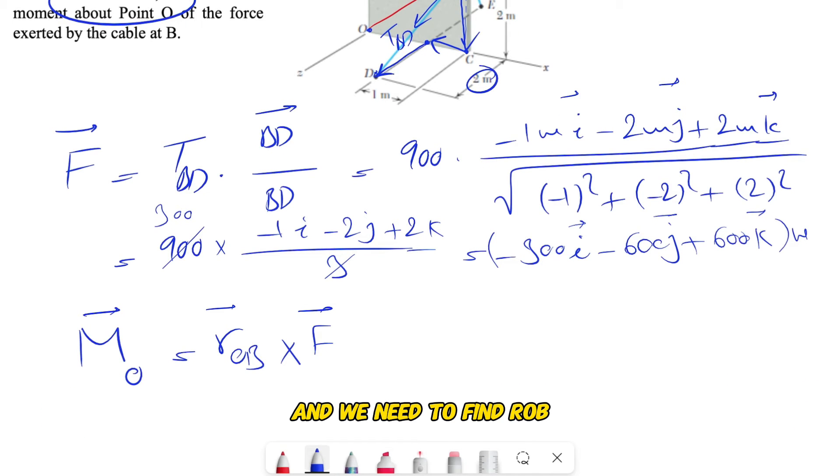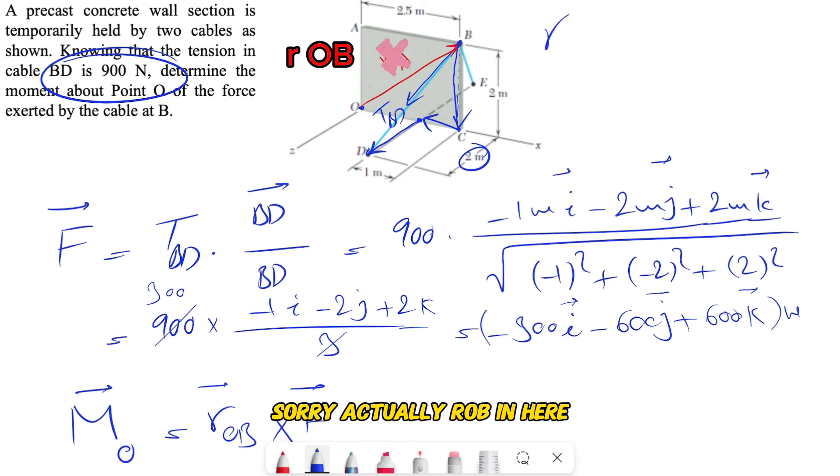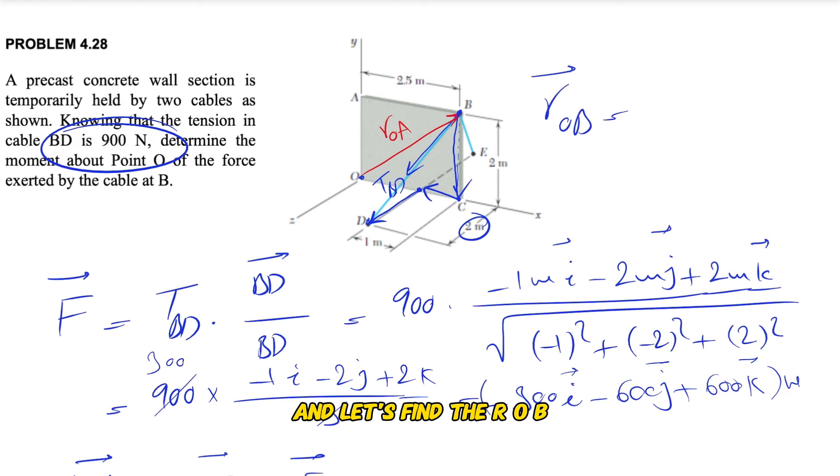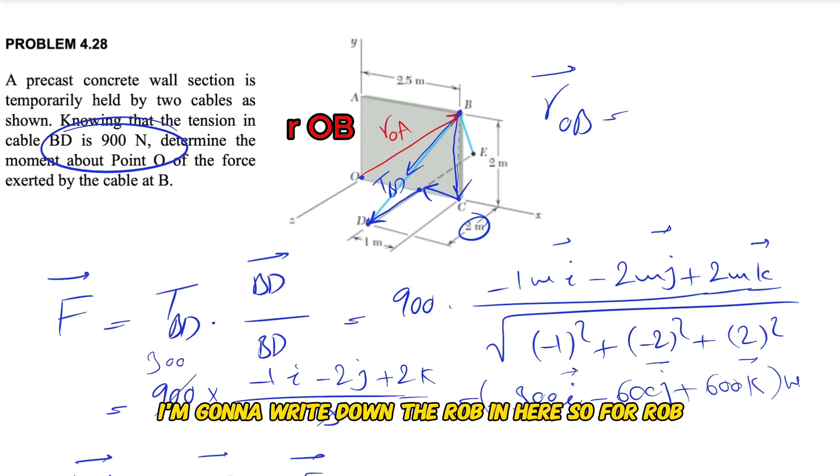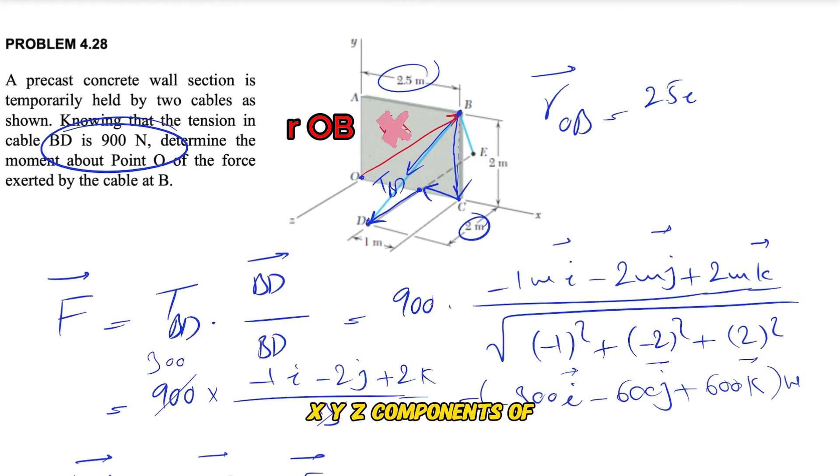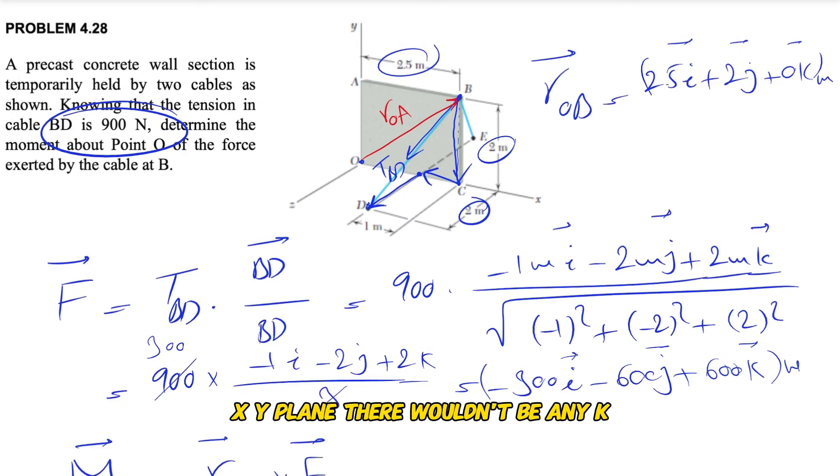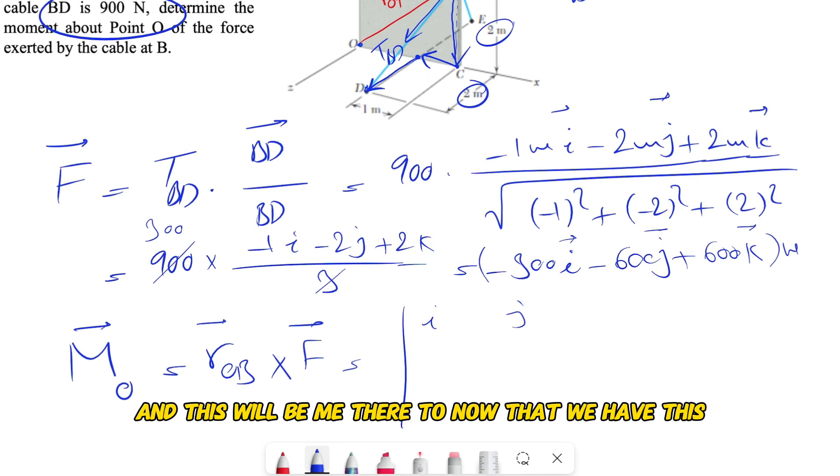So far we have F, and we need to find r_OB. Let's write down r_OB. We basically need to find the X, Y, Z components of point B. For X of B we'll have 2.5 meters, for Y of B we will have 2 meters, and for K, since we are on the XY plane, there wouldn't be any K component.